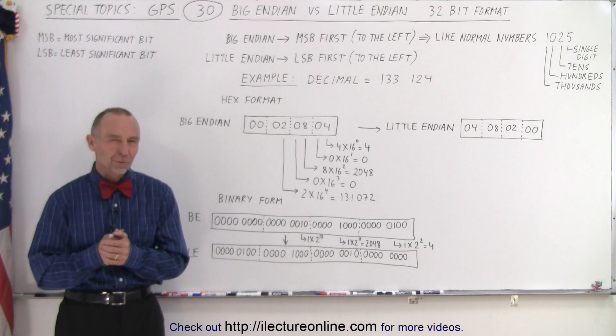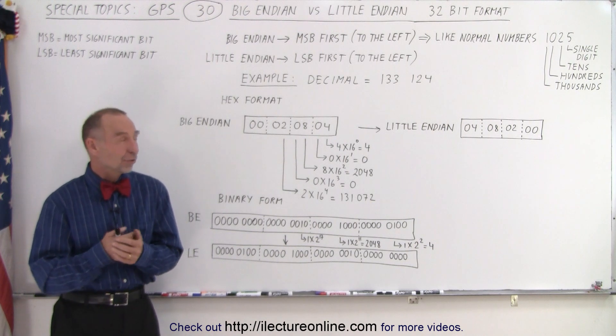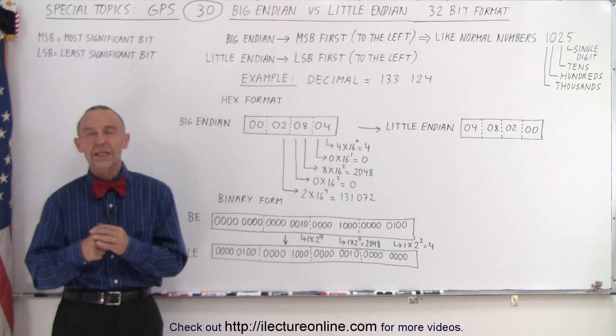Welcome to ElectronLine. To understand the difference between Big Endian and Little Endian, let's do a 32-bit example because that makes it really clear.